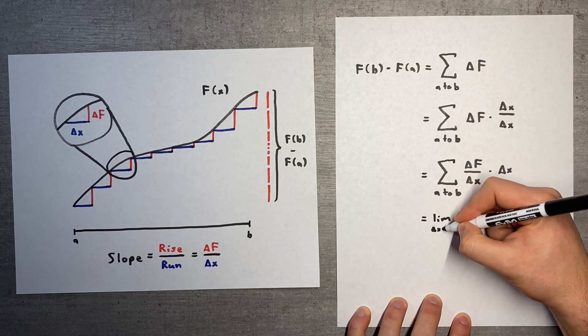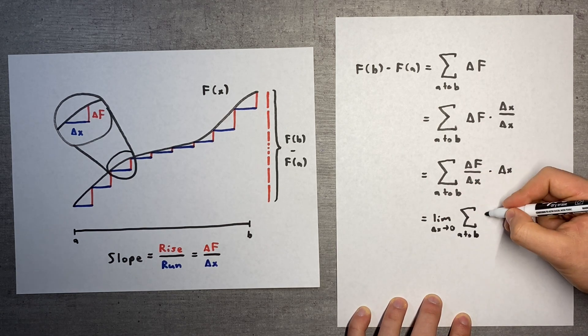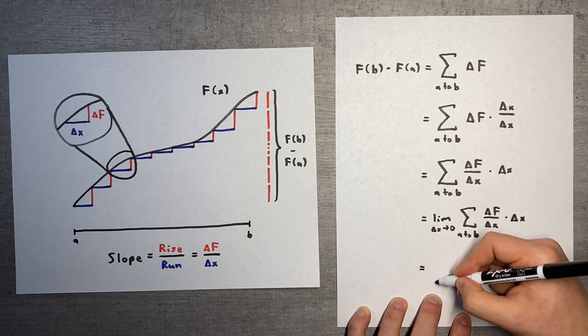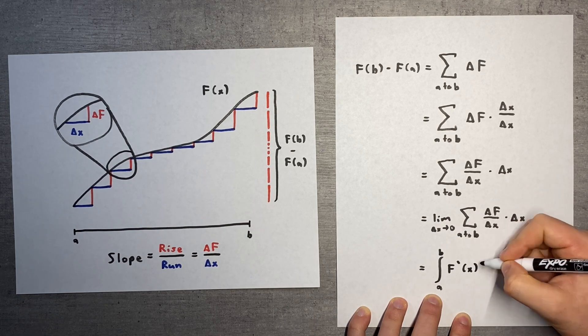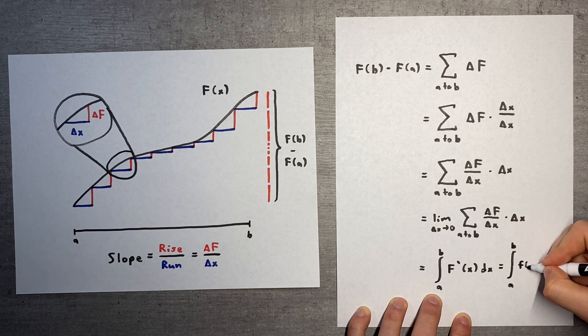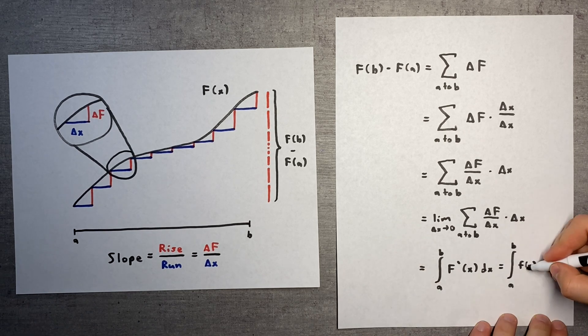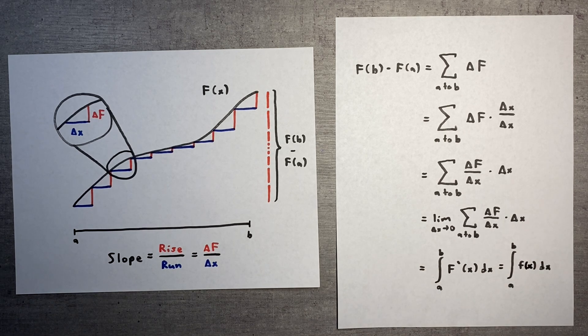Additionally, as the partitions of the sum get smaller and smaller, we end up with an integral. Once we rewrite the derivative of capital F as lowercase f, we get the second fundamental theorem.